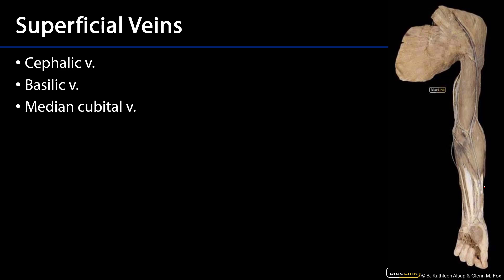The large concept to get here is that along the lateral aspect of the upper limb there is a cephalic vein, and along the medial aspect of the upper limb there is a basilic vein. That cephalic vein is going to drain a lot of the lateral upper limb and it returns that blood — it dives down through the deltopectoral triangle and feeds into the axillary vein.